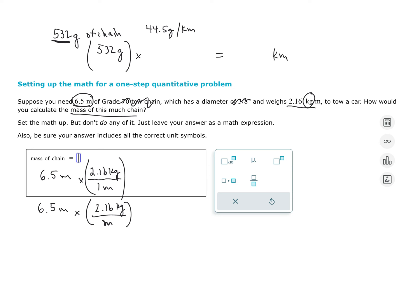We know for every kilometer, you're going to have 44.5 grams of this wire. And again, this is all you should need to set up this problem. We don't have to do any of the calculations. It simply wants this as a math expression. So hopefully that helps with the setup of this problem.